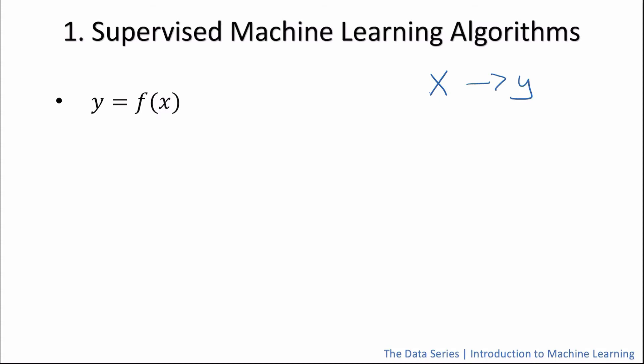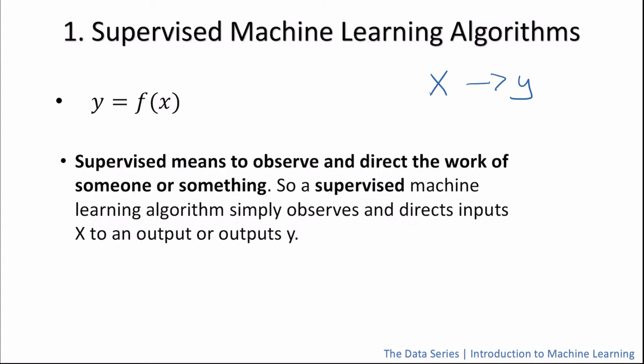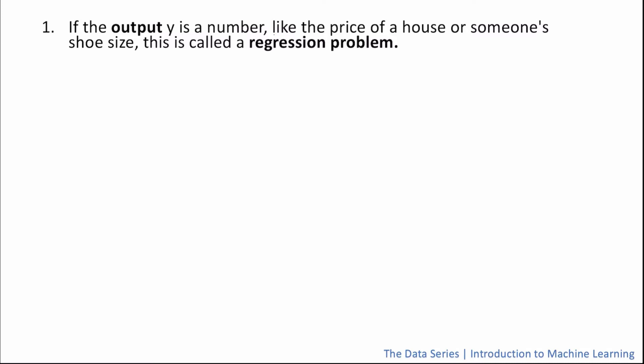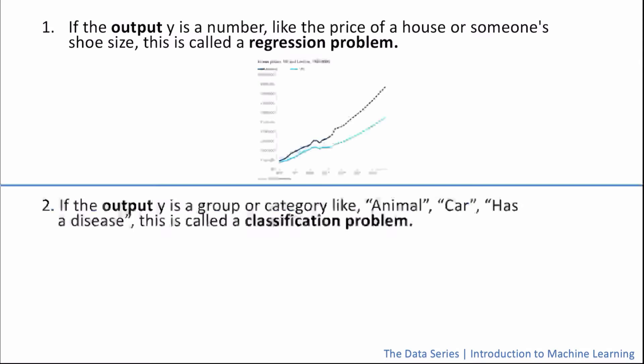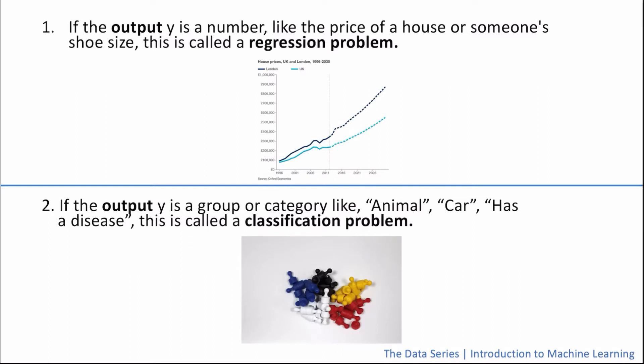To make supervised machine learning algorithms a bit more intuitive, supervised means to observe and direct the work of someone or something. So a supervised machine learning algorithm simply observes and directs the inputs x to an output or outputs y. Supervised learning algorithms can be further split into two groups depending on the output y. If the output y is a number like the price of a house or someone's shoe size, this is called a regression problem. If the output y is a group or category, like for instance an animal or a car or has a disease or does not have a disease, this is called a classification problem.